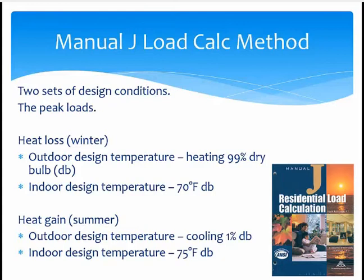For the summer, we also have two design temperatures used for the load calculation. The outdoor design temperature will be the cooling 1% dry bulb temperature — that is, for only 1% of the year, so slightly more than 80 hours, will it be warmer than this temperature. So it's actually pretty hot, depending on the home's location. Meanwhile, the indoor design temperature in the summer is going to be 75 degrees Fahrenheit dry bulb.